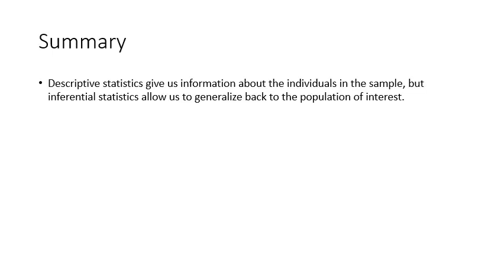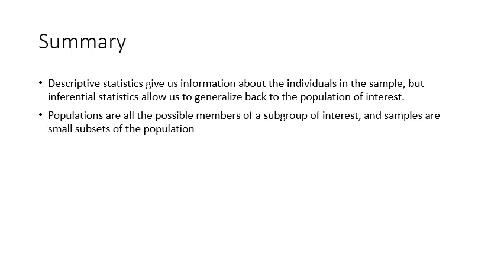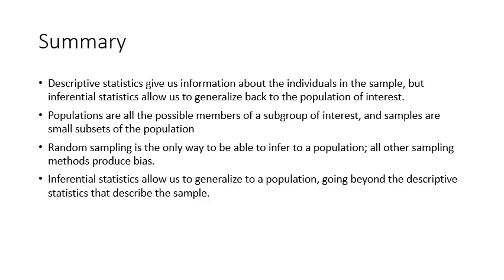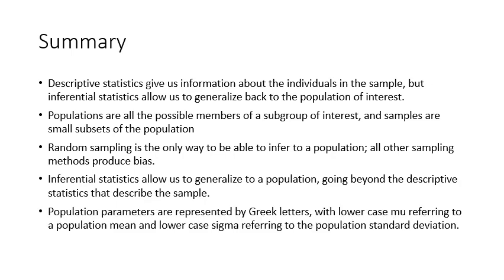So that's kind of how we work with probability. So in summary, descriptive statistics give us information about the individuals in the sample, but inferential statistics allow us to generalize back to the population of interest. Populations are all the possible members of a subgroup of interest and samples are small subsets of the population. Random sampling is the only way to be able to infer to a population. All other sampling methods produce bias. Inferential statistics allow us to generalize to a population going beyond the descriptive stats that describe the sample. Population parameters are represented by Greek letters with lowercase mu referring to a population mean and lowercase sigma referring to the population standard deviation. And the symbol for mu looks like this, kind of a weak example, and the lowercase sigma looks like that. And that is the conclusion of this week's content.